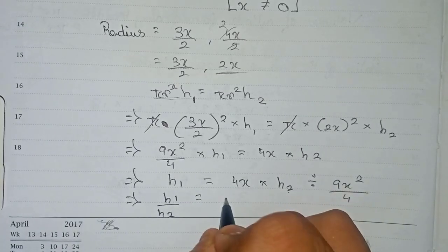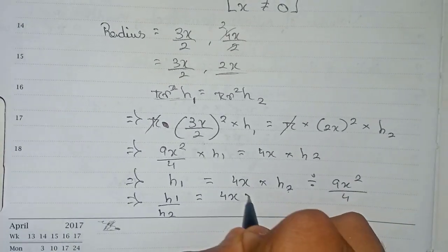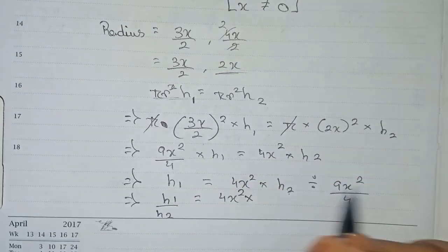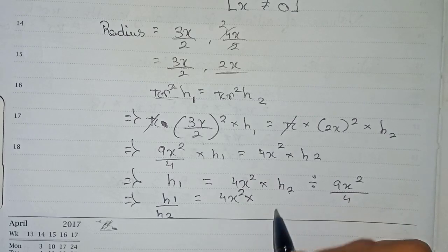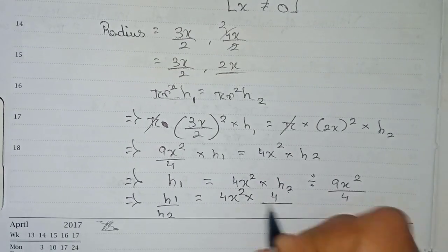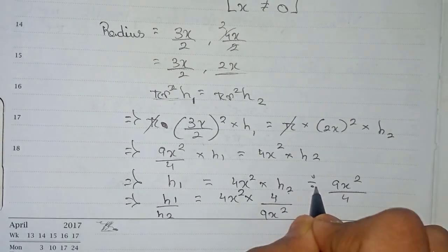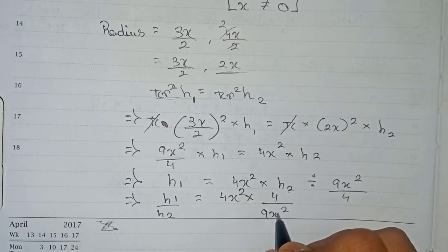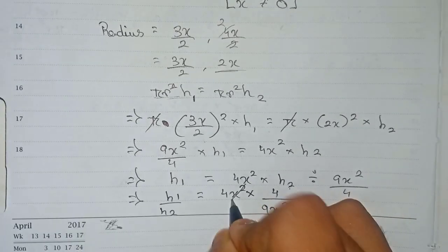It is equal to 4x squared, multiplied by 4 by 9x squared. So we are reciprocating it. 4 will go up and 9x squared will come down. So this x squared and x squared we cut down.